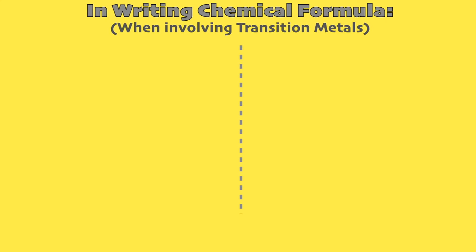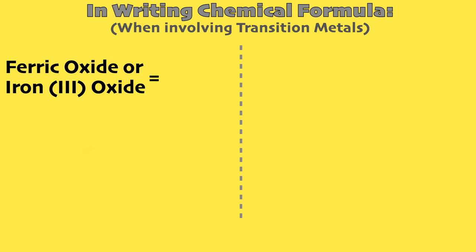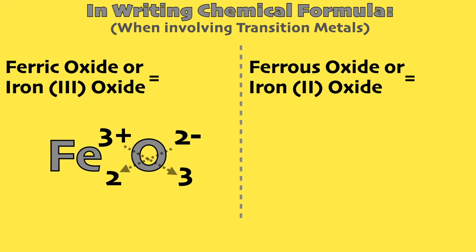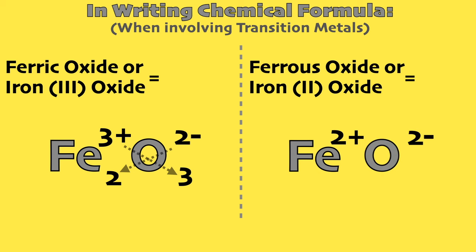When we deal with cation metals that can have multiple charges, like ferric oxide or iron 3 oxide, we know that iron is 3+ from the Roman numeral and oxygen is 2-, so when we crisscross, it becomes like this. We also have ferrous oxide or iron 2 oxide. The iron has a 2+ and oxygen is 2-, so when we crisscross, it becomes like this.